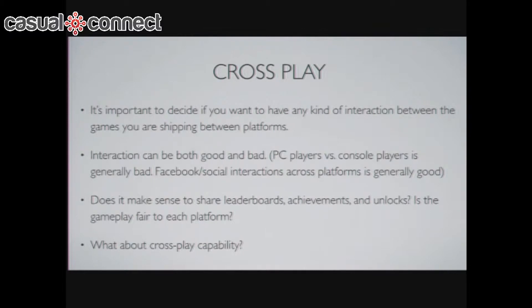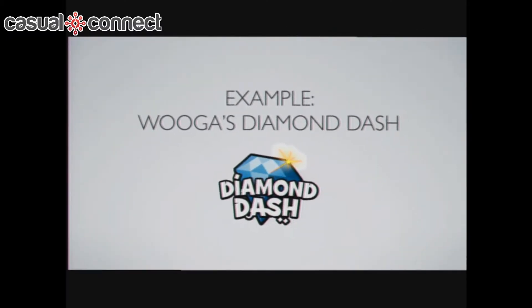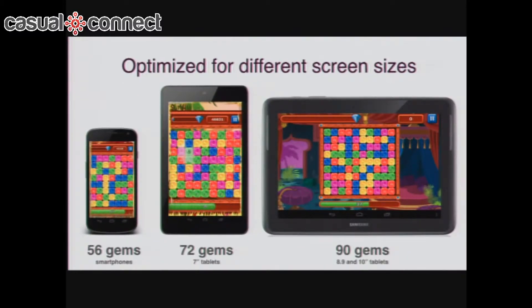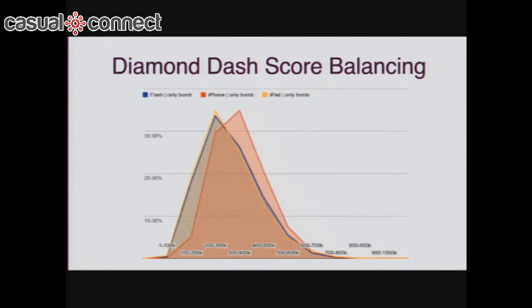And what about cross-play capability — am I going to do cross-device gameplay? A good example is Wooga's Diamond Dash. They're one of our customers, full disclosure. They've developed their game differently for every platform: on smartphones, 56 gems; tablets, 72; big tablets, 90; and then they follow the tablet strategy mostly for the web-based version. But they also go deeper — they look at statistics of how well people are getting through the game, whether they're getting frustrated and walking away. They found that every single platform, people engaged with it a little differently, so they had to modify and customize for every one of them.